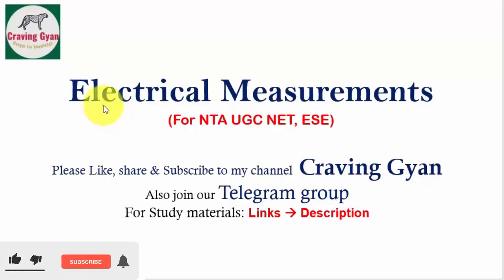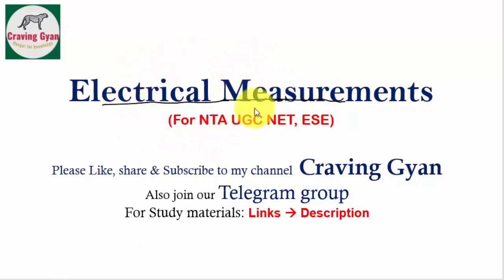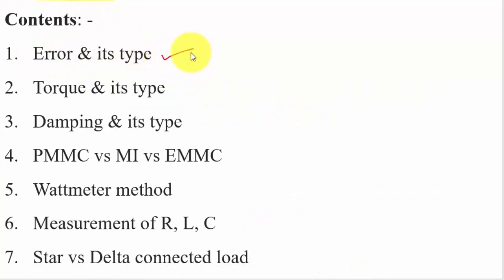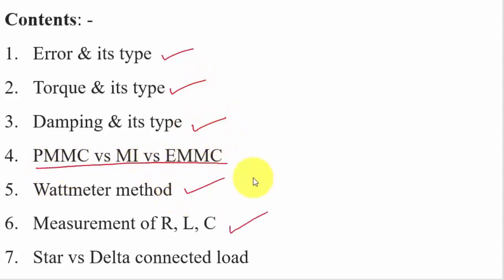Hello friends, welcome to the fast track video on electrical measurements. This video will be very helpful if you are preparing for exams like UGC NET and engineering service examinations. In this video I am going to talk about: what do you mean by error, types of error, torque and its types, damping and its types, comparison of PMMC, MI and EMMC, types available to measure inductance, capacitance and resistance, and star and delta connected loads.